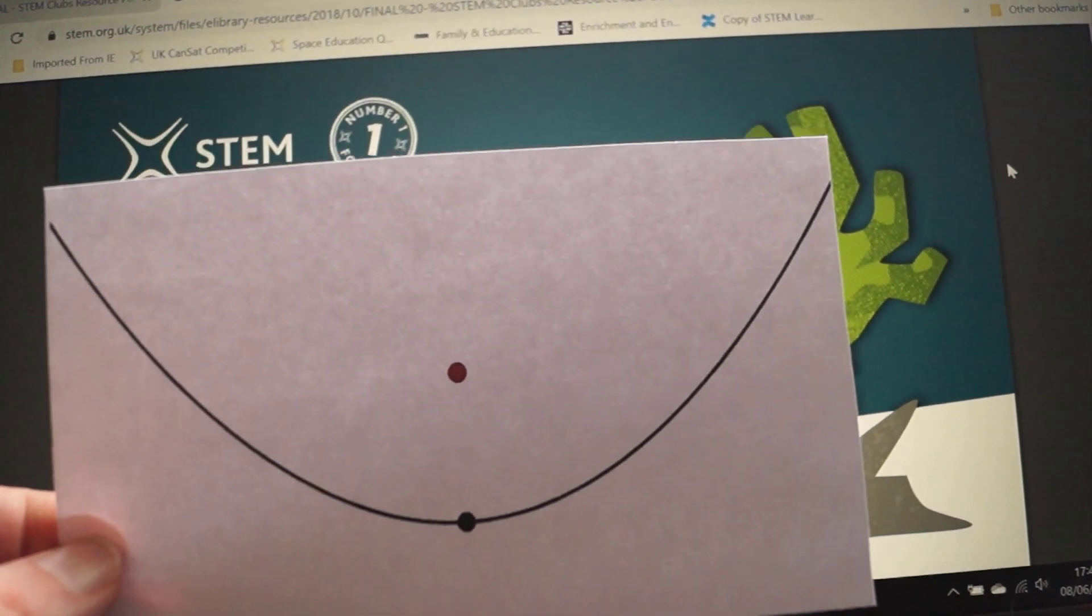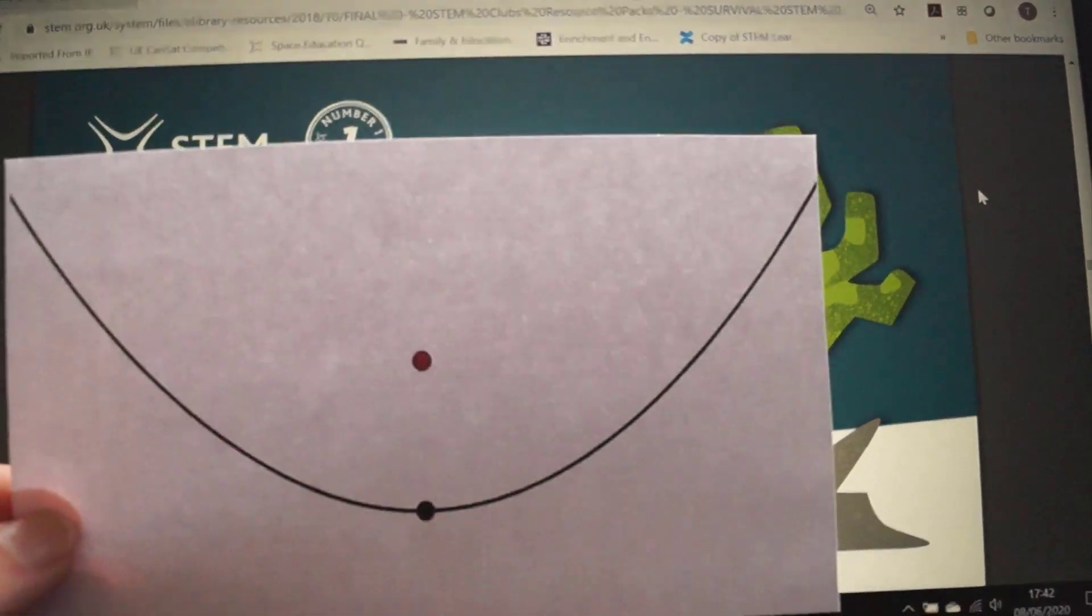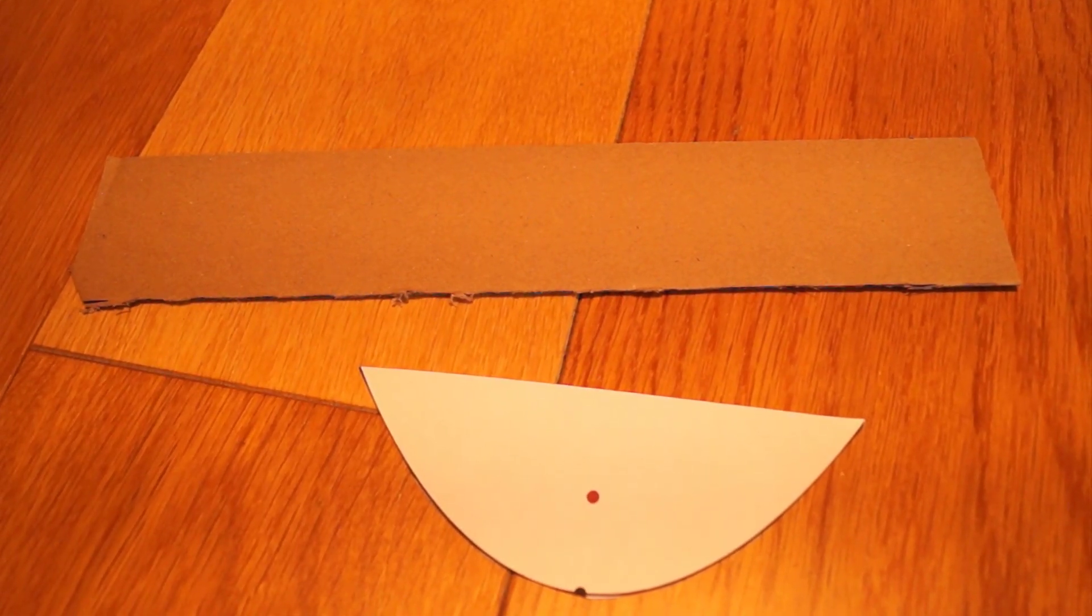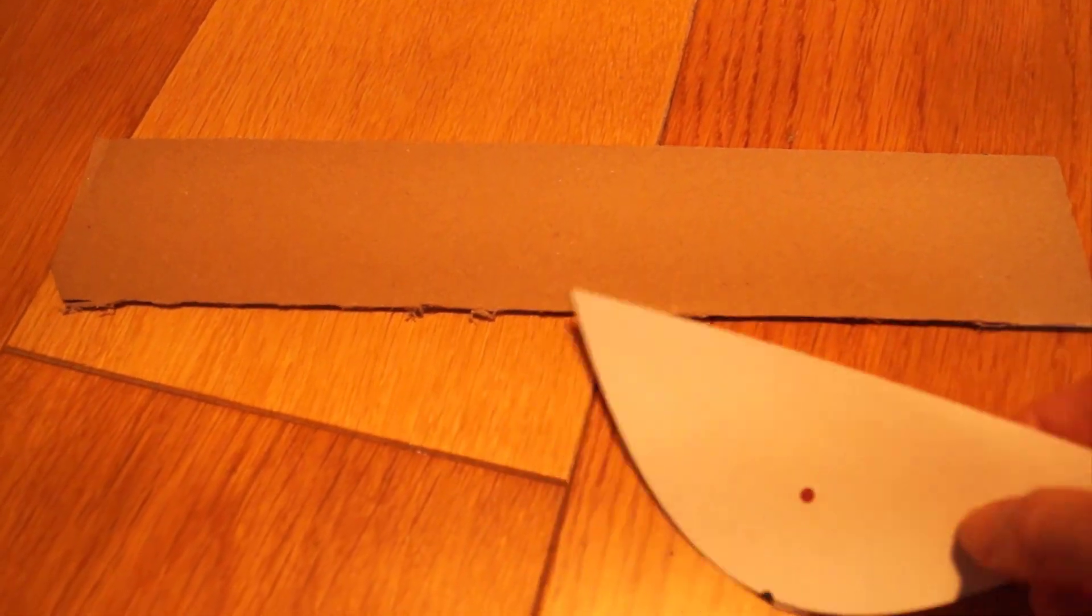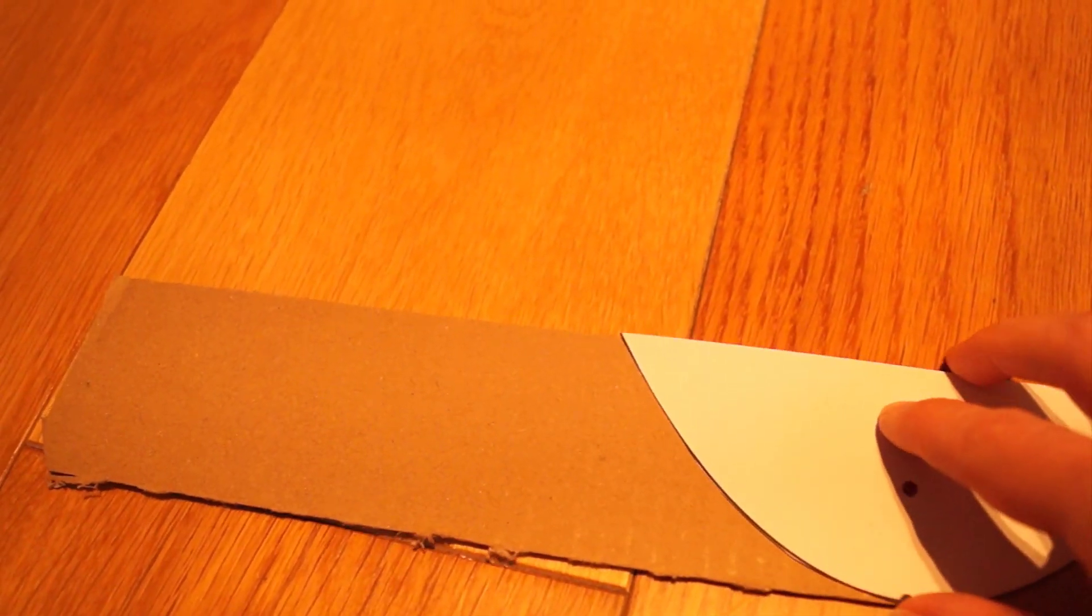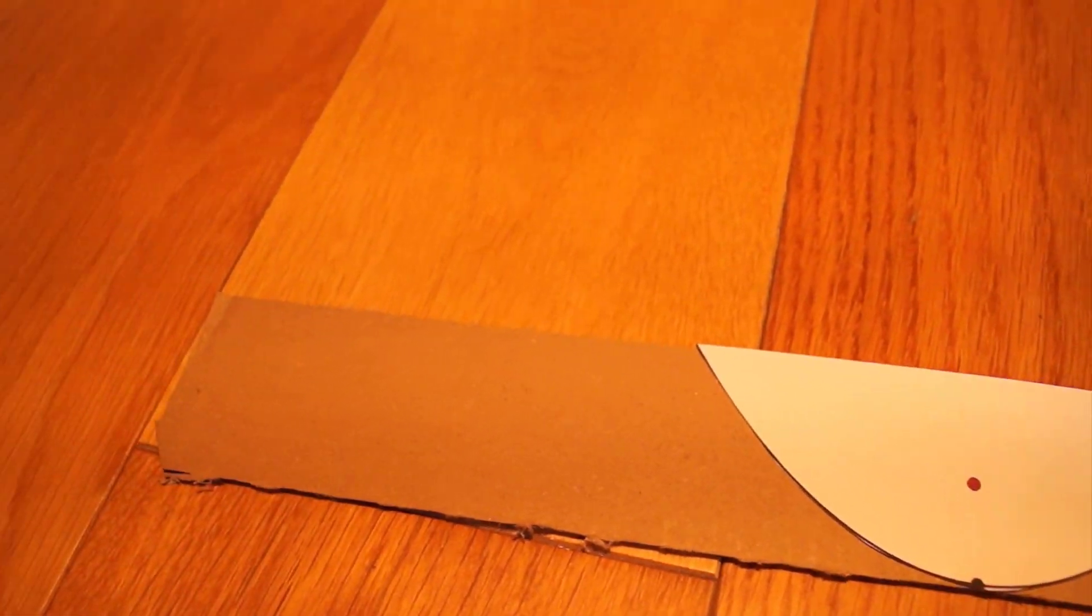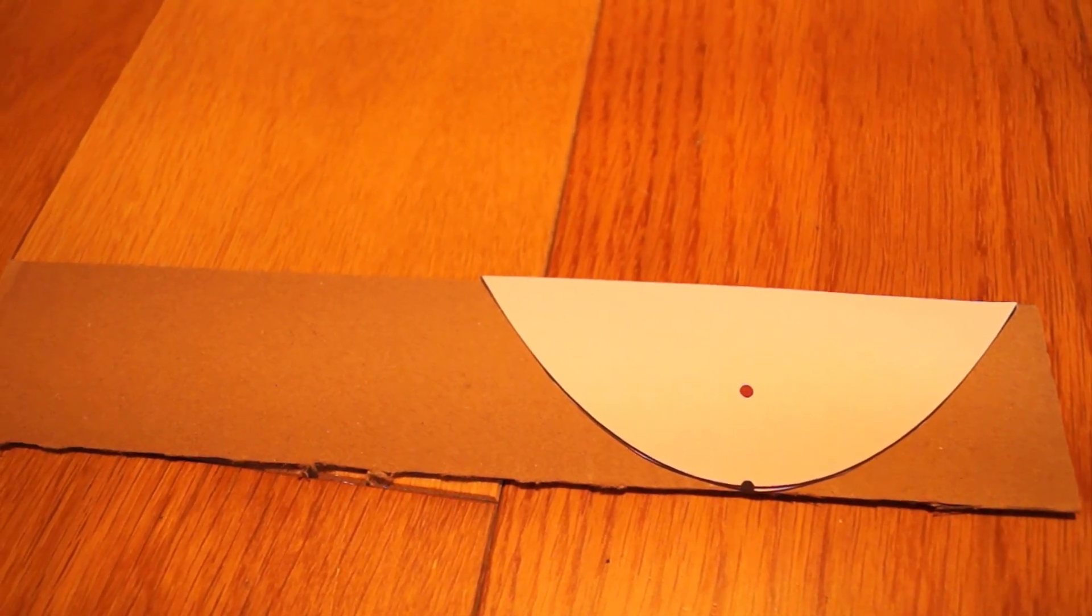All we're going to need for this is a couple of pieces of cardboard and some tin foil. Let's see how we get on. So I've cut out my parabola template and I've also got some cardboard and I'm going to draw around the shape of the parabola onto the cardboard and then cut out two parabola shaped bits of cardboard.